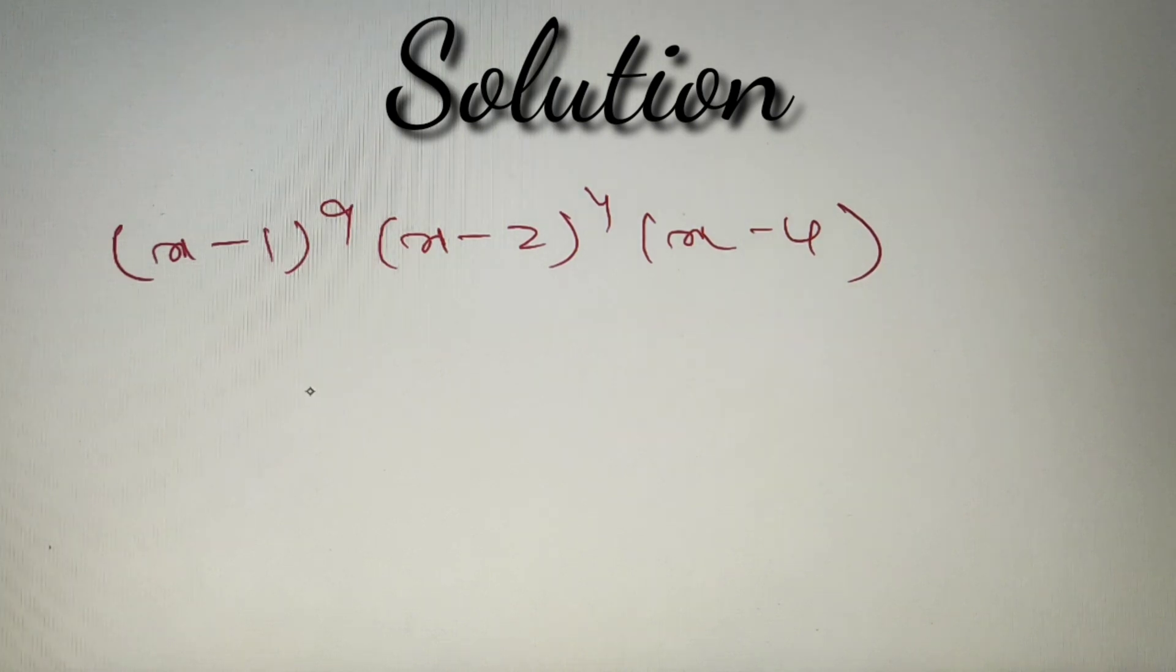The simplest method to solve such questions is to put the value of x as 1 in all the brackets and you will get the sum of coefficients of the polynomial. So if we put 1 in the first bracket, we'll get 0 raised power 9, 1 in the second bracket gives minus 1 raised power 4, and 1 in the third bracket gives minus 3.